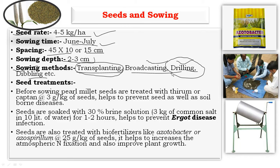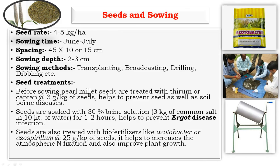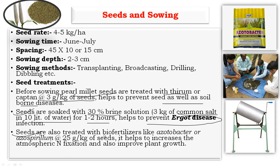Another sowing method is broadcasting or drilling. The drilling method is popularly used for sowing pearl millet to obtain economic yield. For seed treatment, before sowing, pearl millet seeds are treated with thiram or captan at the rate of 3 grams per kg of seeds to prevent seed-borne and soil-borne diseases. Seeds are also soaked in 30 percent brine solution — 3 kg common salt in 10 liters of water — for 1 to 2 hours to prevent ergot disease infection. Seeds are also treated with biofertilizer like Azotobacter or Azospirillum at the rate of 25 grams per kg to increase atmospheric nitrogen fixation and improve plant growth.